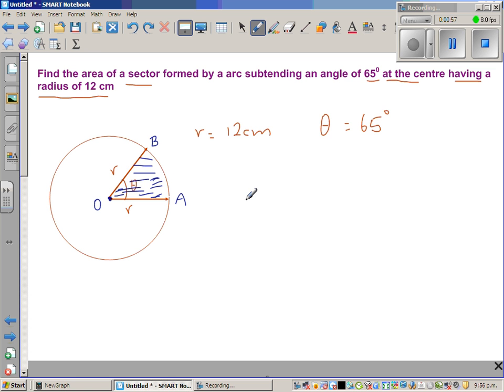We're going to use logic or ratio and proportion. Let's make two columns, one for angle and the other for area.